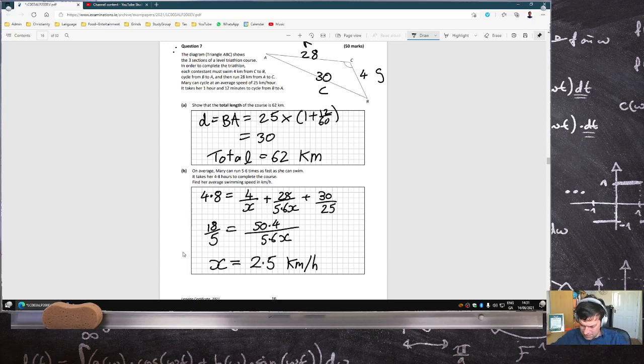Is that right? Seems a bit small, doesn't it? Let me check if that's right. So 4 over 2.5. So that takes 1.6 hours to do the swimming section. Plus 28 over 5.6 times 2.5. Plus 30 over 25. 4.8. Okay.